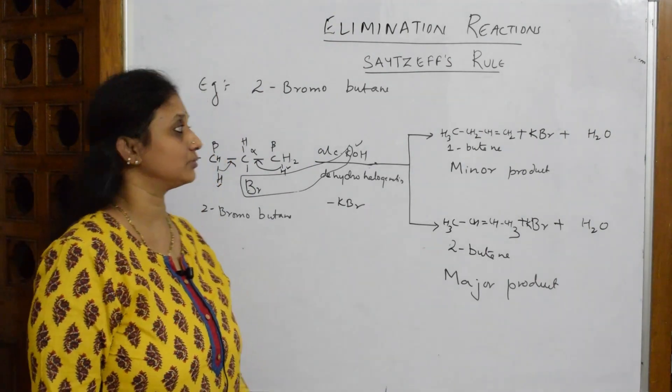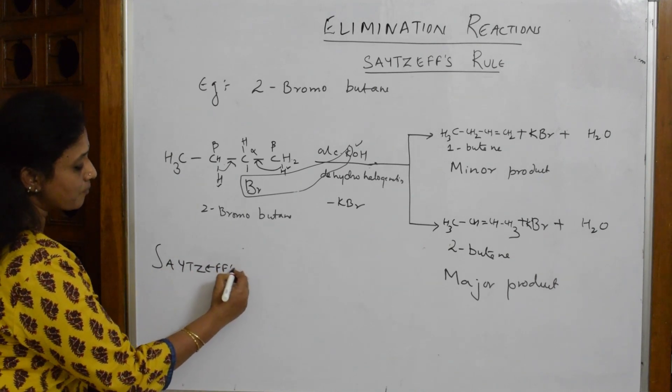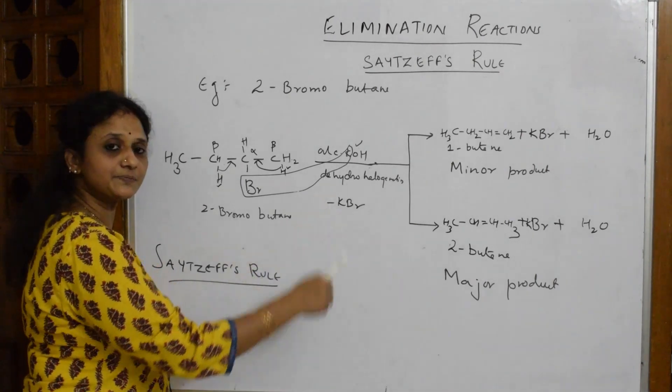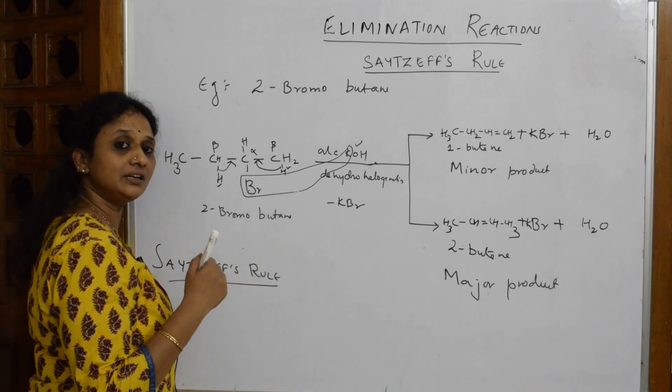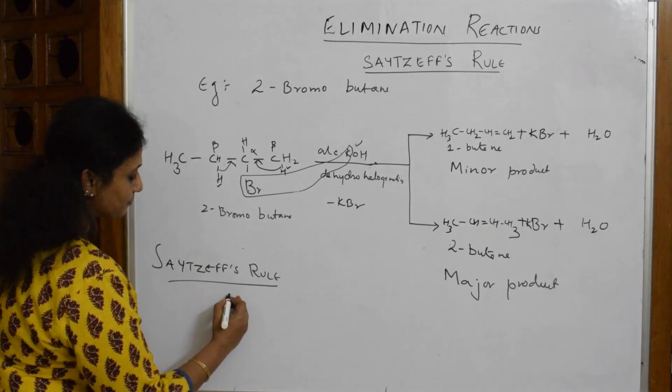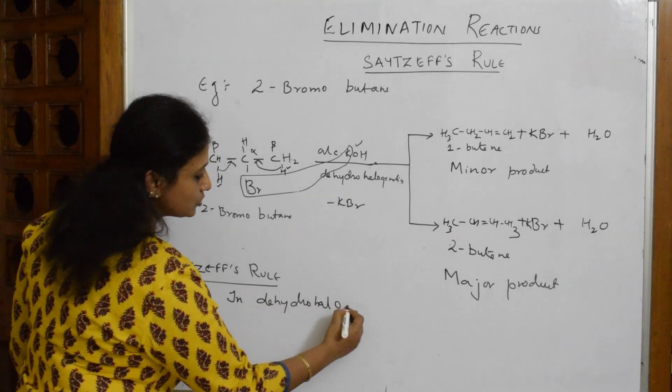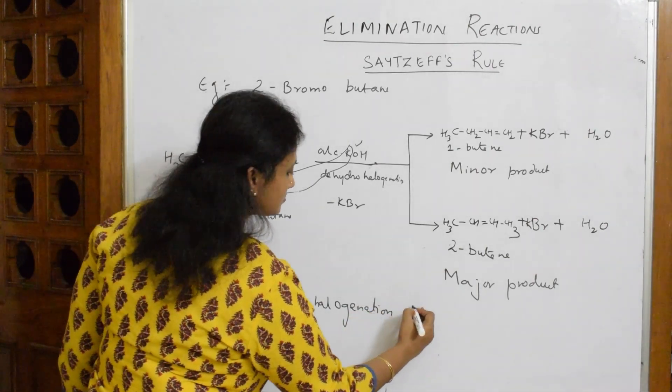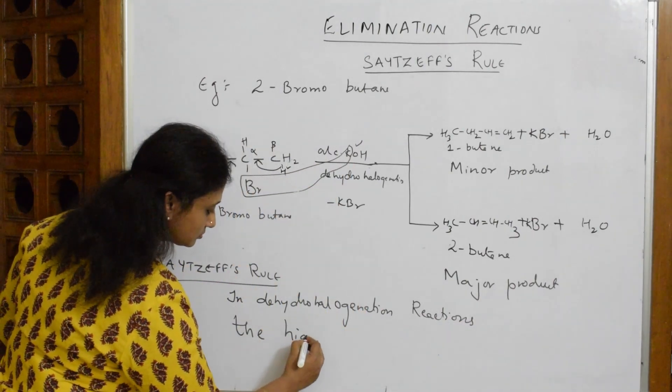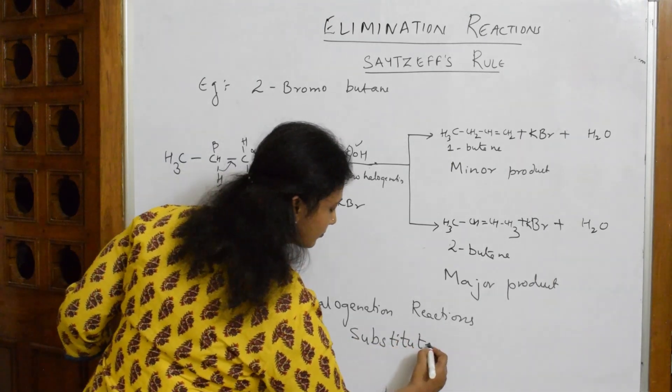Let me write Saytzeff's Rule. According to Saytzeff's Rule, the highly substituted alkene is the major product during dehydrohalogenation of alkyl halides. In dehydrohalogenation reactions, the highly substituted alkene is the major product.